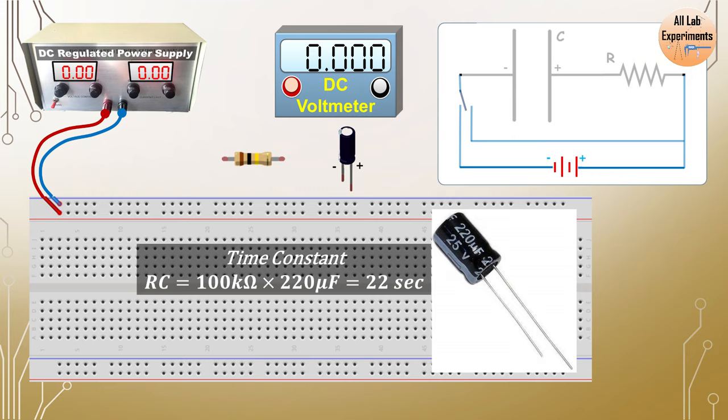So I am choosing 100 kilohm resistance and 220 microfarad capacitor. Also check what is written on your capacitor. So with 220 microfarad you can see here it is written 25 volt.